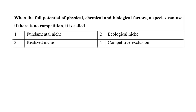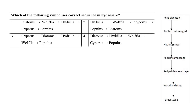Question seven: When a species can use the full potential of physical, chemical, and biological factors with no competition, this situation is known as the fundamental niche. So the right answer is the fundamental niche.